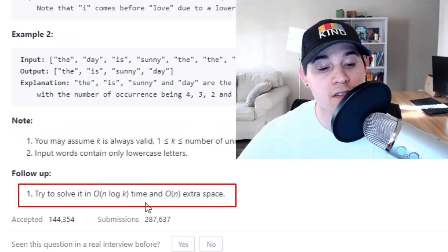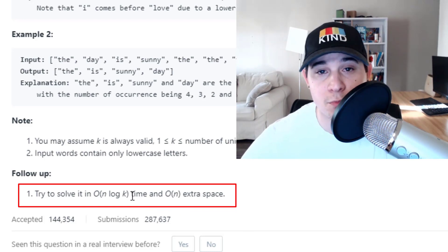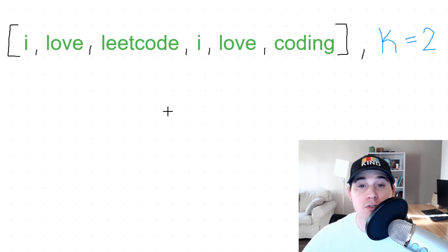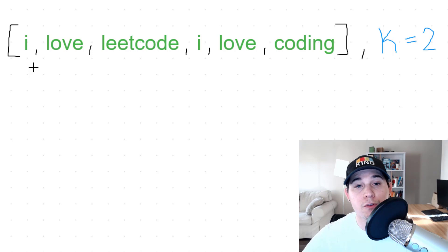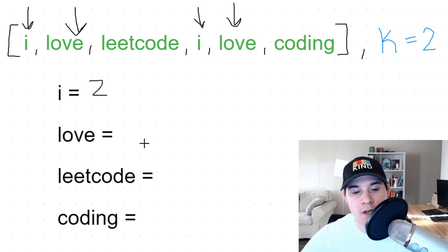This is the optimized approach I'll be going over. Before we jump into exactly how to solve this problem, let's make sure we understand what we have to do. We need to return the k most frequent strings. With this input, k equals two and we have the strings: i, love, leetcode, i, love, coding. We need to first get the frequencies of all the strings in our array.